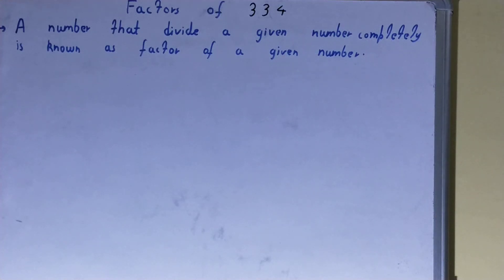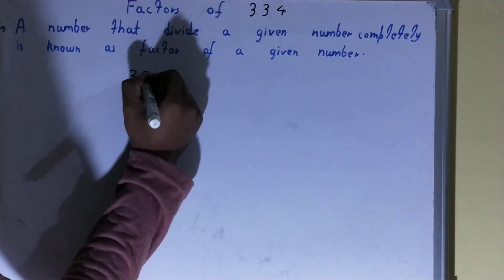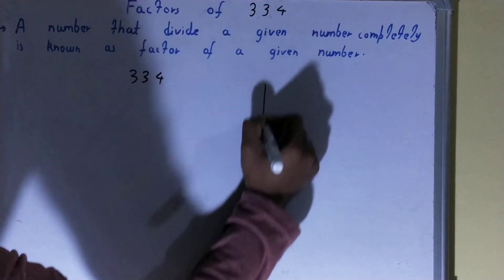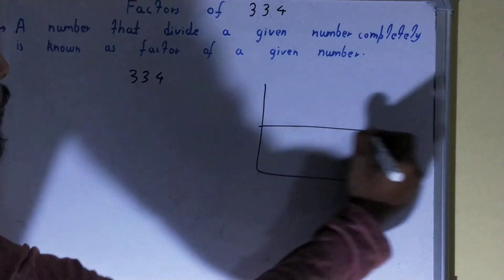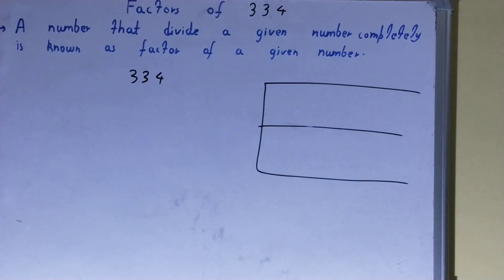Hello friends, in this video I'll be helping you with the factors of the number 334. So let's start. To find it out, you need to write the number like this and draw like this. Once you're done with that, you need to start with the lowest natural number.